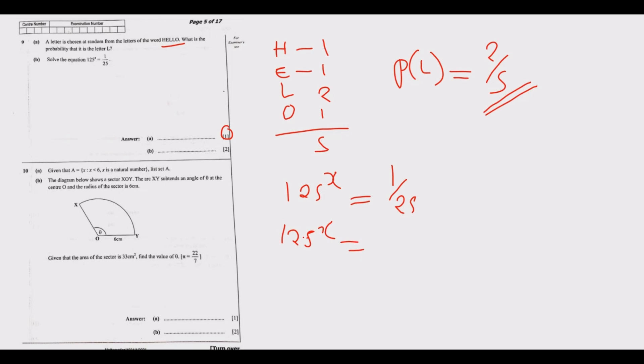So this function can also be written as 125^x is equal to 25 to the power negative 1. Remember the law of indices: when you have 1 over a to the power x, what it means is this is the same as a to the power negative x, because this negative power means division.